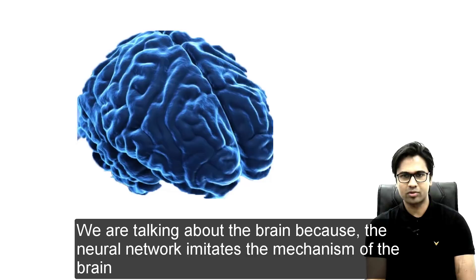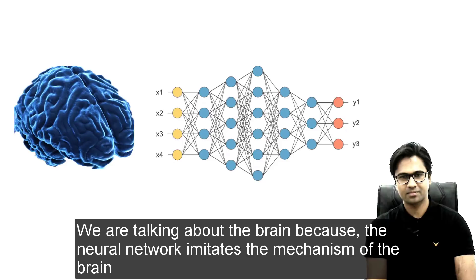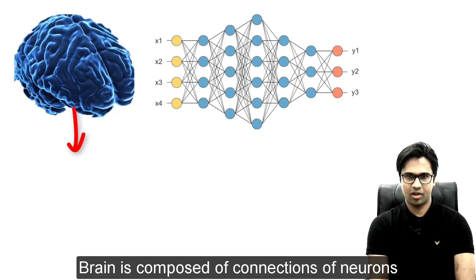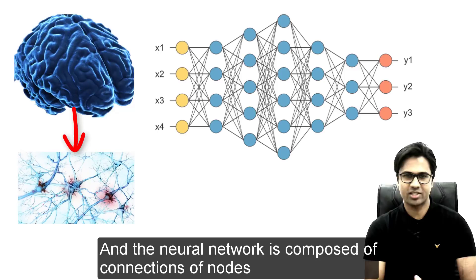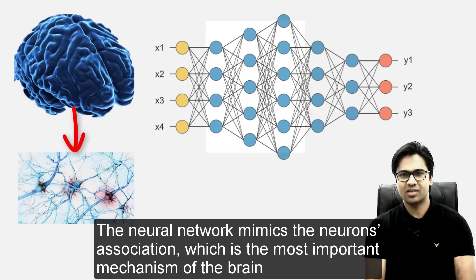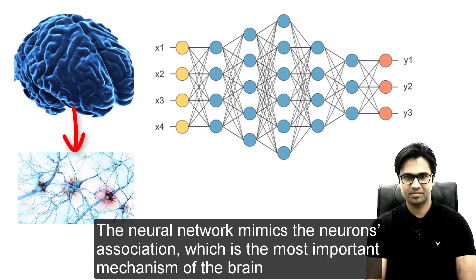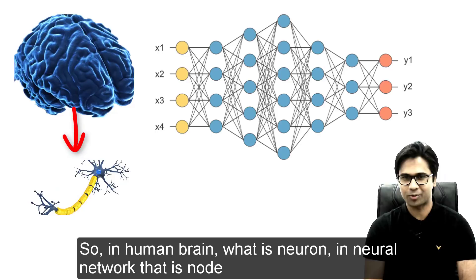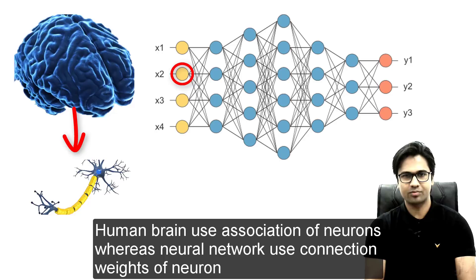We can say the brain is a gigantic network of neurons, and the association of neurons forms specific information. We are talking about the brain because the neural network imitates the mechanism of the brain. Brain is composed of connections of neurons, and neural network is composed of connections of nodes. The neural network mimics neuron association, which is the most important mechanism of the brain. So in a human brain, what is a neuron — in a neural network, that is a node.